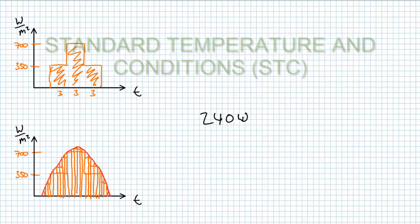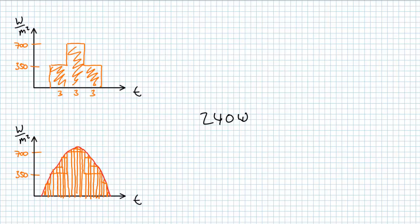Standard temperature and conditions, or STC, is a means of establishing a fair fight between rival PV panels, meaning that everyone fighting has the same input conditions of radiant input, temperature, atmospheric conditions, and, believe it or not, wind speed.